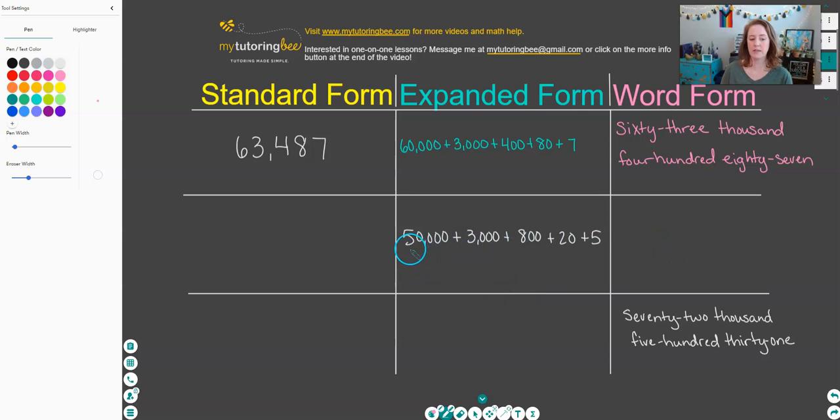Let's go on down to the next one. In this next example, we are given expanded form, so let's start off by writing that in standard form. I see 50,000, I see 3,000, I see 800, 20, and 5. So that just tells me what number or what digit goes in each place value.